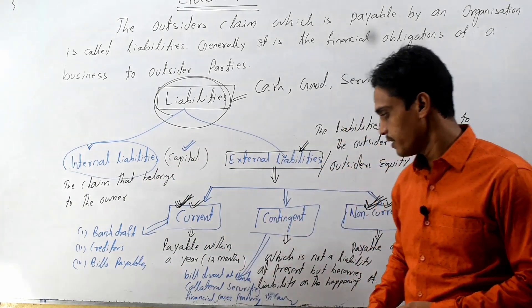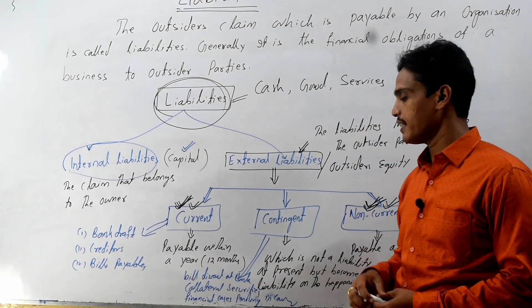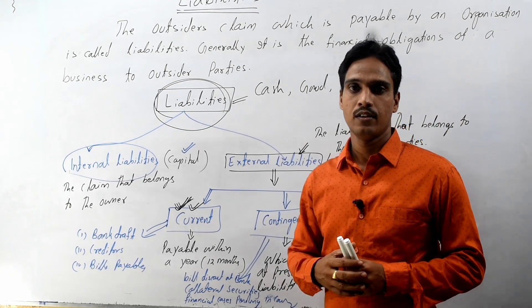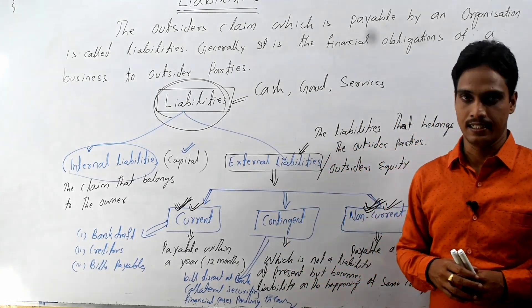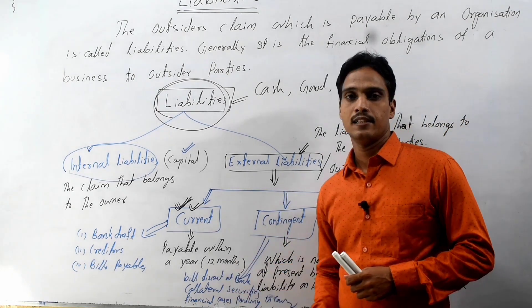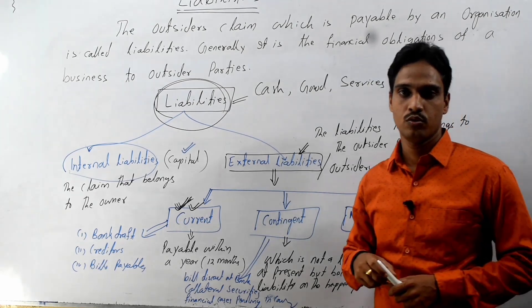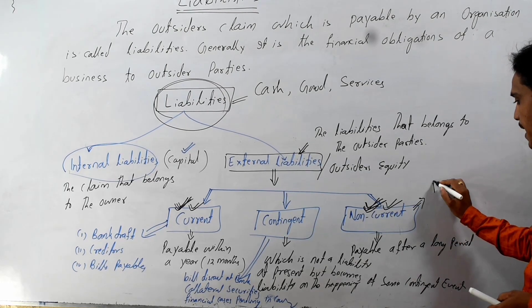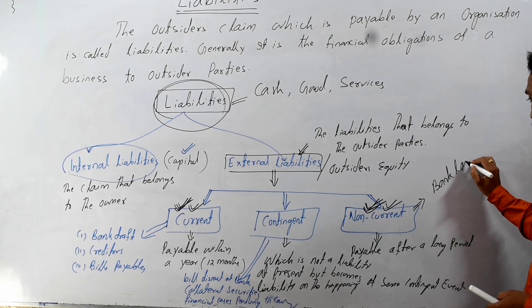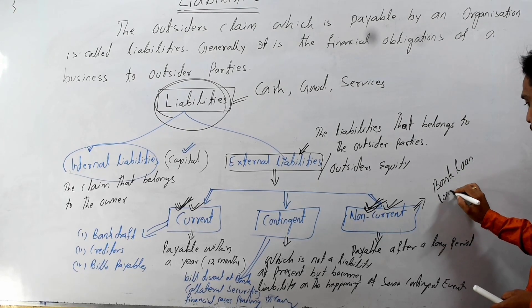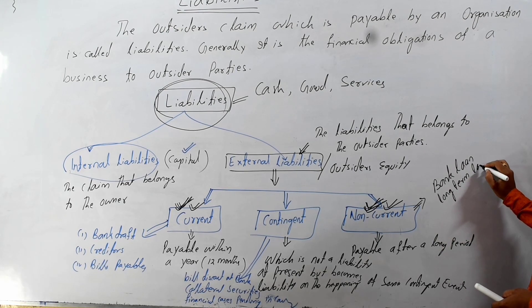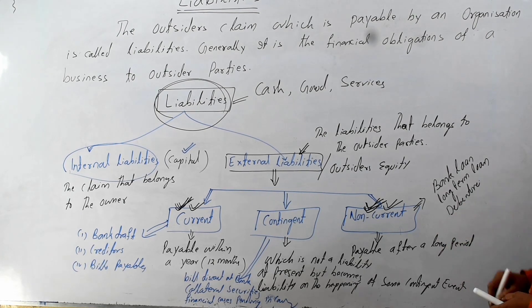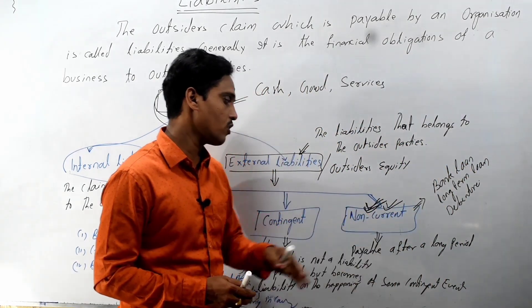It is important to remember that contingent liabilities of an organization are generally not written inside the balance sheet. They are specifically mentioned in the footnote of the balance sheet. Non-current liabilities include bank loan, long-term loan, and debentures.